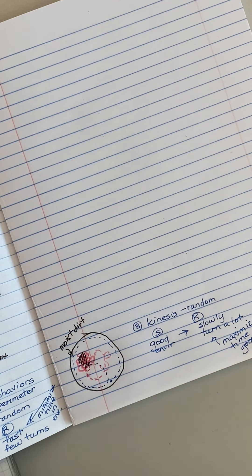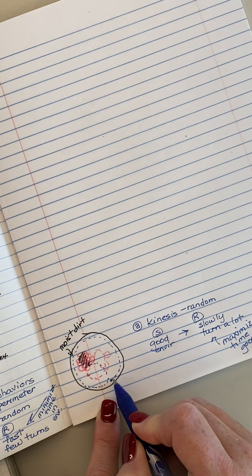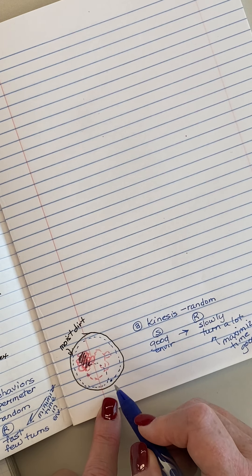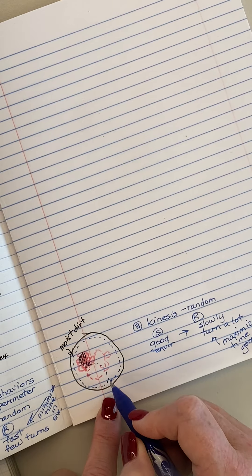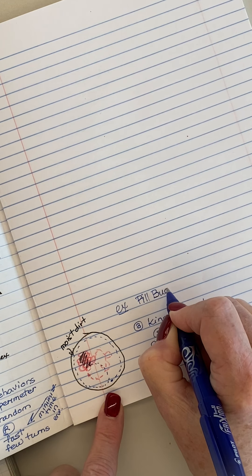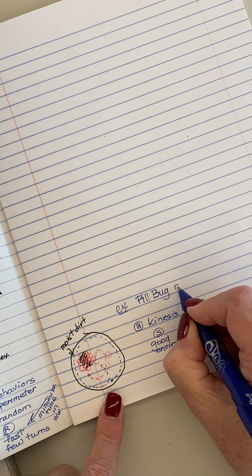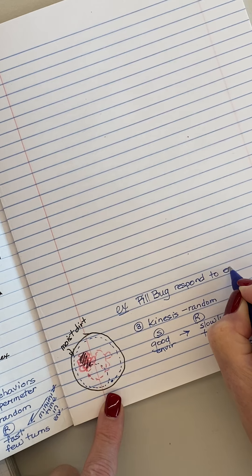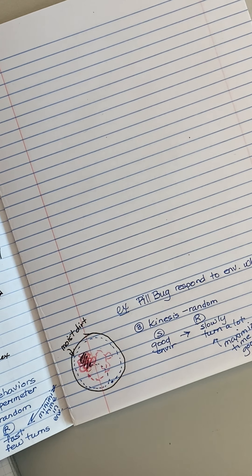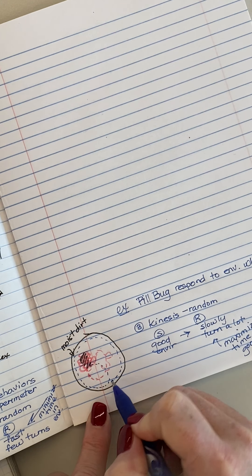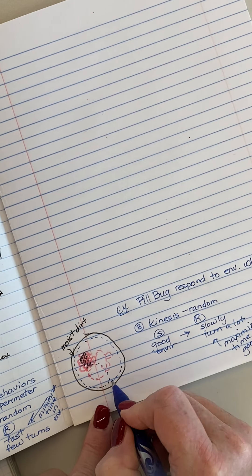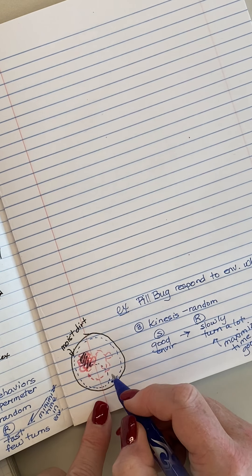And the big, big deal about kinesis is this pill bug only perceives where its feet land. It doesn't know what's in front of it, what's behind it. It will not perceive until it's actually there. So this is going to be an example is our pill bug is only going to respond to the environment where its feet are where its little feet are. It's not able to go, oh man, you put me over here and I really would like to be over there and the good stuff and it has no idea. It knows I'm here.